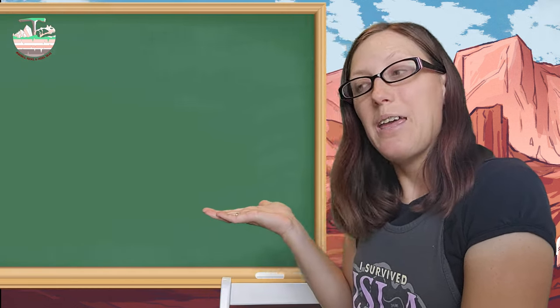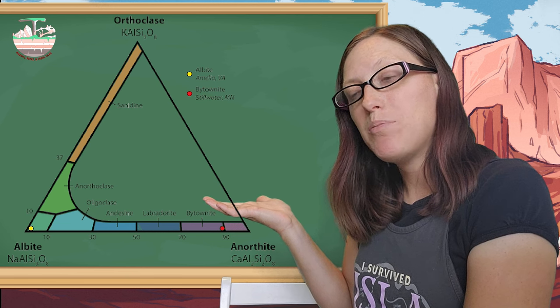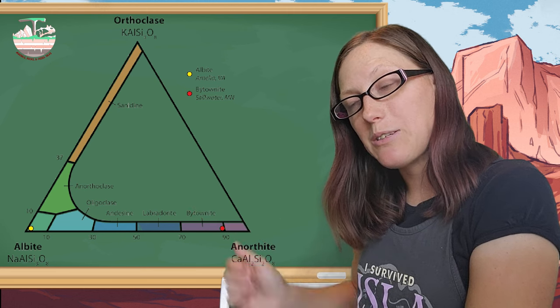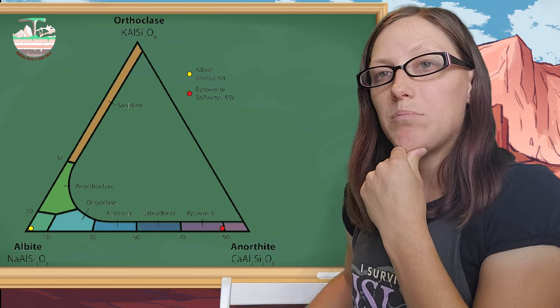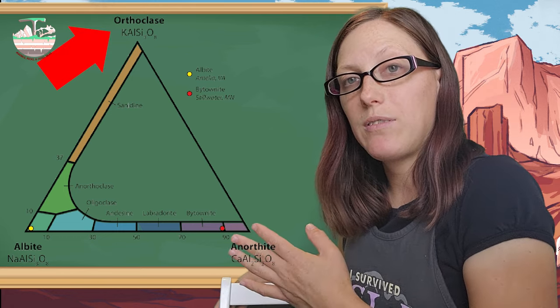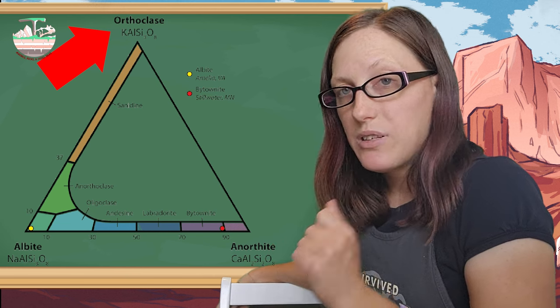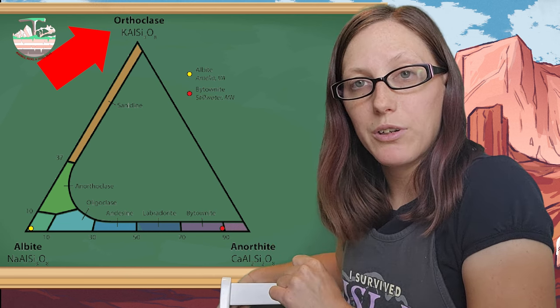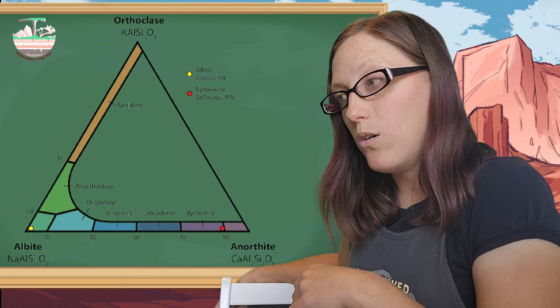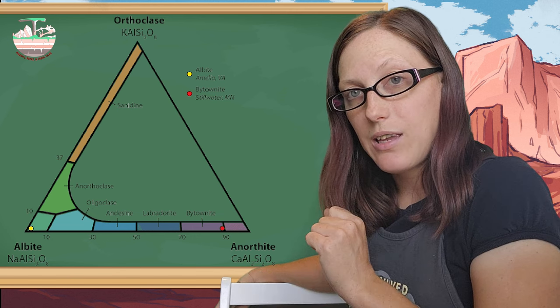So let's look at a couple of diagrams. The first thing you will notice is the compositional phase diagram for feldspars. If you look up at the top, that is where orthoclase and microcline are — K-spar, potassium feldspar. That end-member is KAlSi3O8. That is its chemical composition.